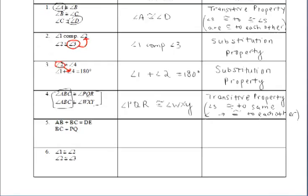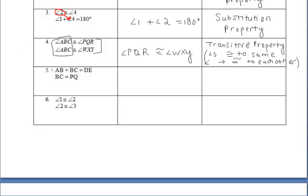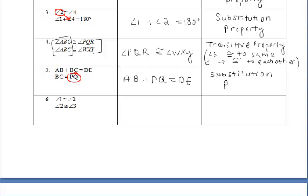In example five, we have an equation to start off with. We know that AB plus BC is equal to DE, and we know that BC is equal to PQ. Since BC is equal to PQ, we can replace BC in the top equation with PQ, and it would still be true. So we can say that AB plus PQ must equal DE. The reason is the substitution property, since we physically replaced BC with PQ in the original equation.